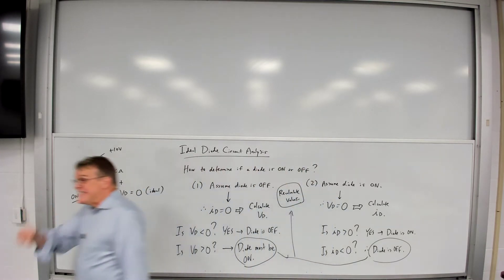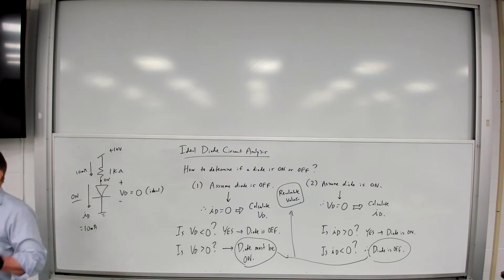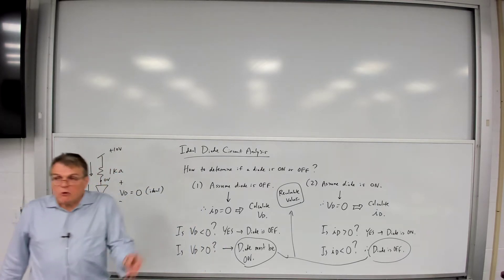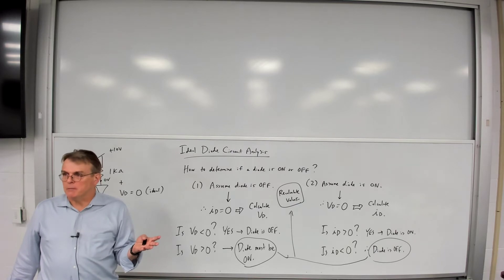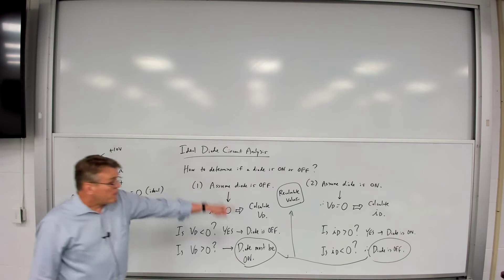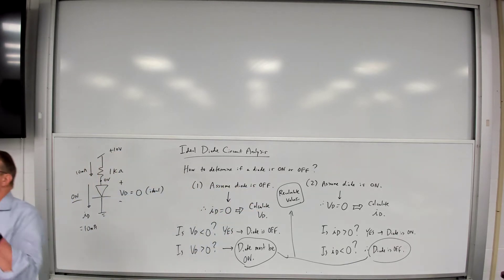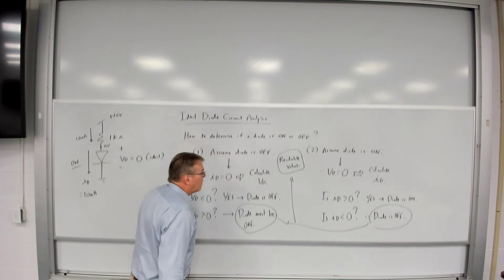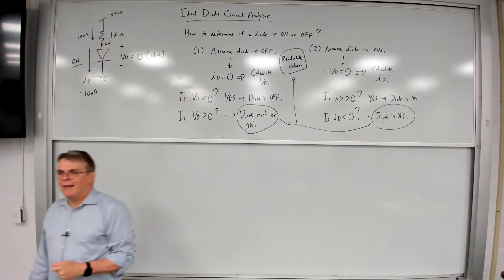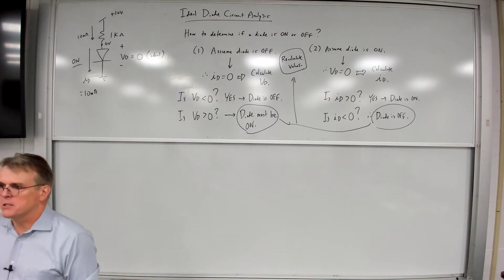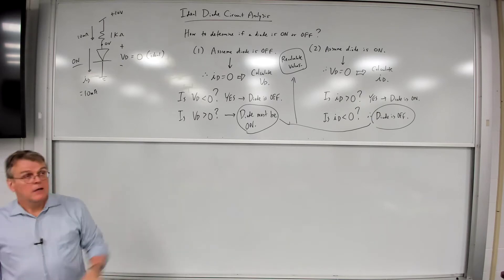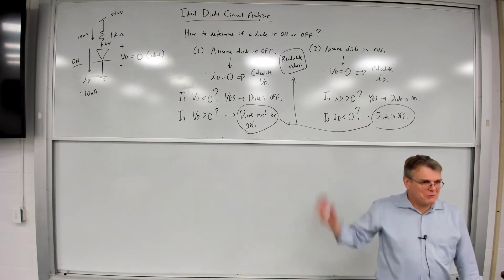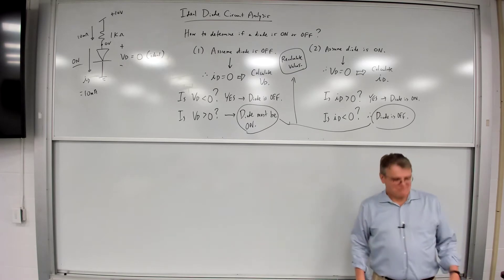We're going to be doing this not only with diodes this semester, but also with transistors. These components have multiple possible operating conditions and we cannot just look at a circuit and know by inspection what they're going to be. We have to make a reasonable guess, check that assumption by looking at the boundary conditions. You'll all get good at this before the semester is over, because this is how you solve problems — the answer never pops into your head, you have to check it.